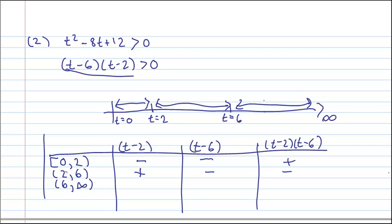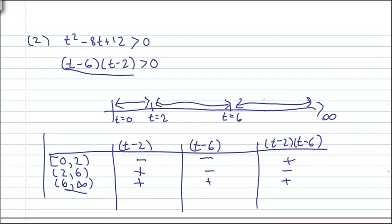The last interval, I'll plug in anything on this interval. From 6 to approaching infinity. Let's plug in 100. 100 minus 2 will give me a positive value. 100 minus 6 will give me a positive value. Therefore, the product will give me a positive value.